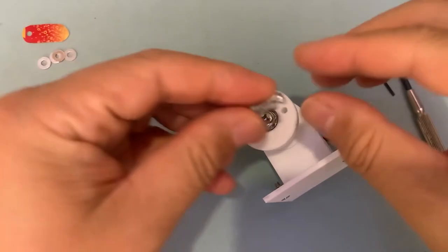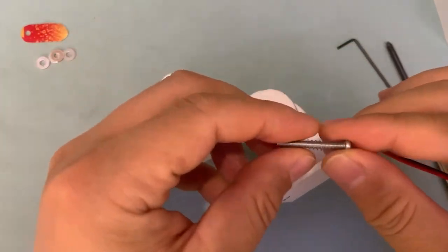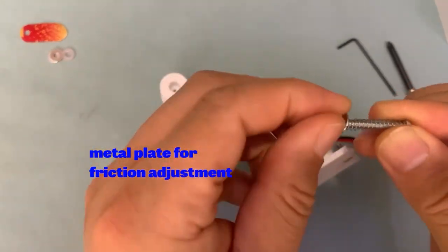A simple metal plate is fixed with a spring which adjusts the friction force with the ball bearing.